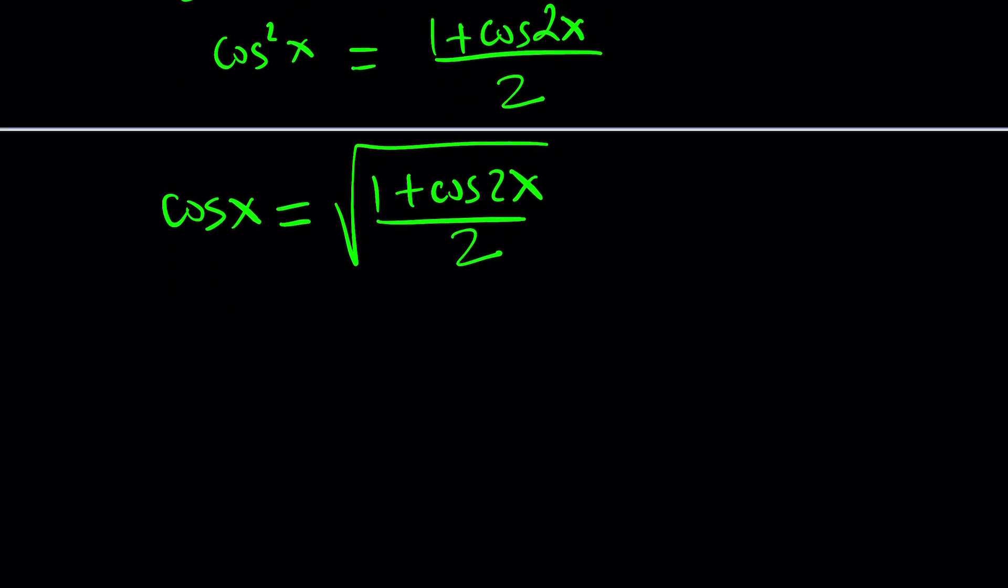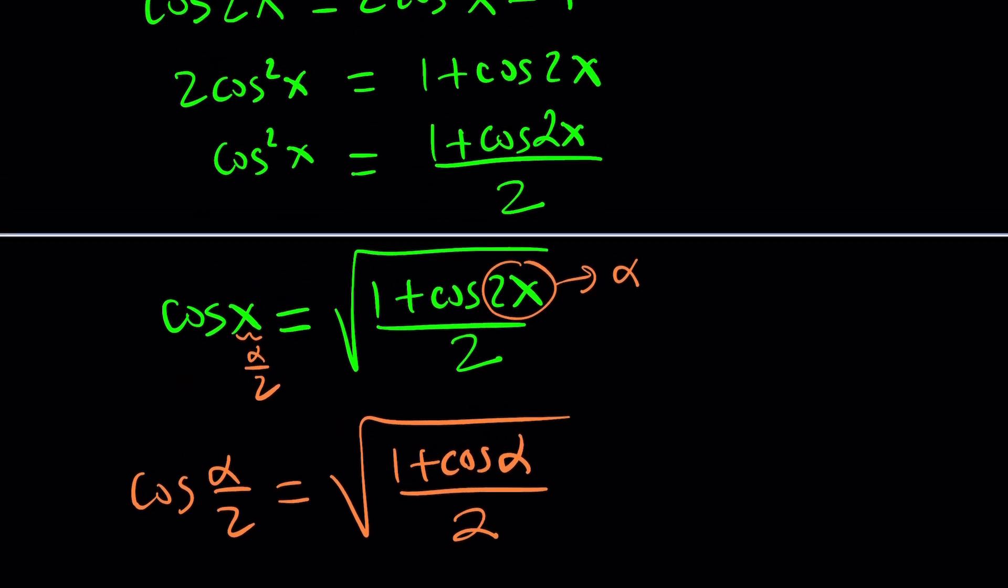You can also change this formula a little bit, like replace 2x with something like alpha. And then x would be half of alpha. So in other words, this is a half angle formula that gives you cosine of alpha over 2 in terms of cosine of alpha, which is probably a little bit more intuitive and easy to use.